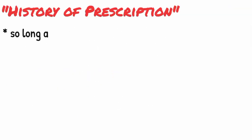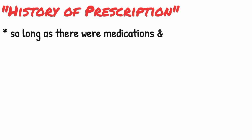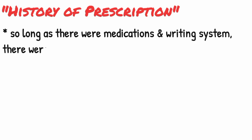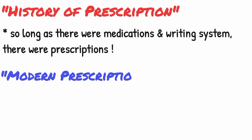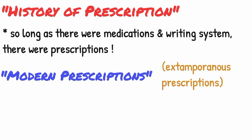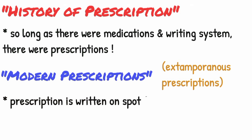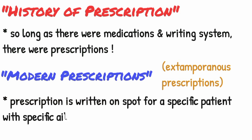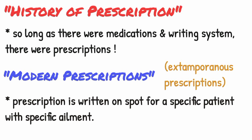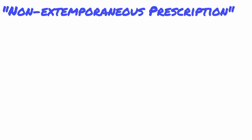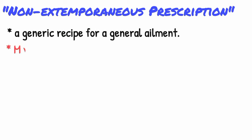So long as there were medications and a writing system to capture directions for preparation and usage, there were prescriptions. Modern prescriptions are actually extemporaneous prescriptions, meaning that the prescription is written on the spot for a specific patient with a specific ailment. This is distinguished from a non-extemporaneous prescription, which is a generic recipe for a general ailment.